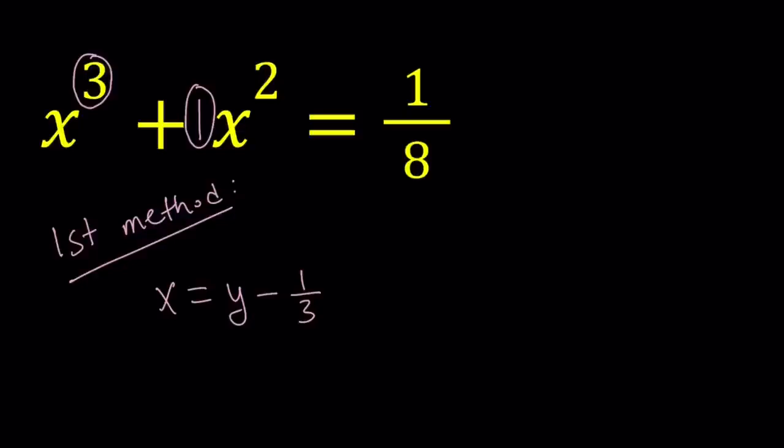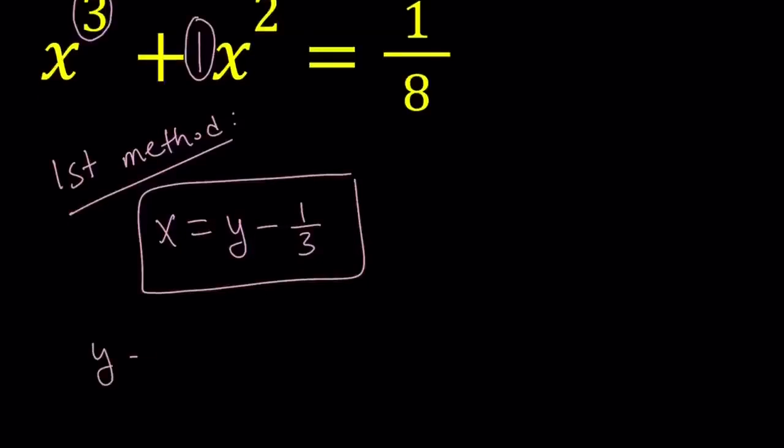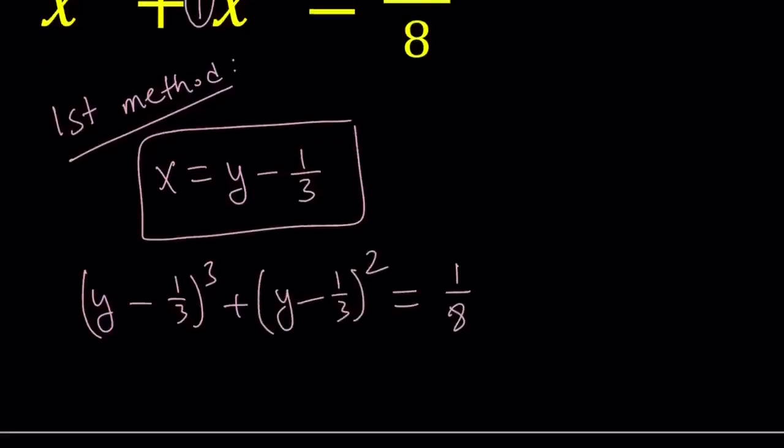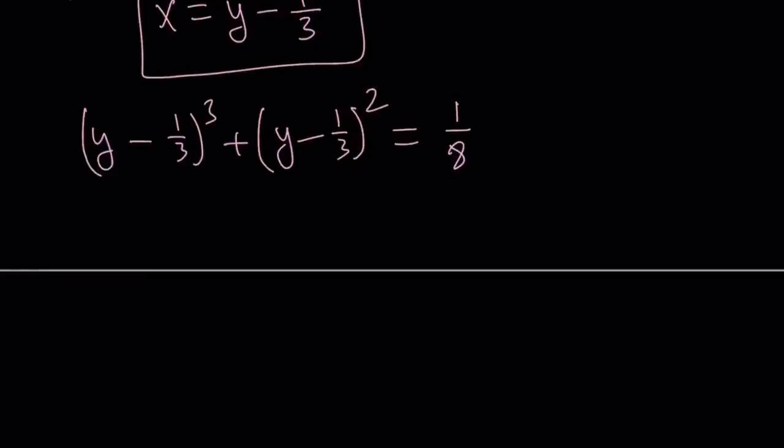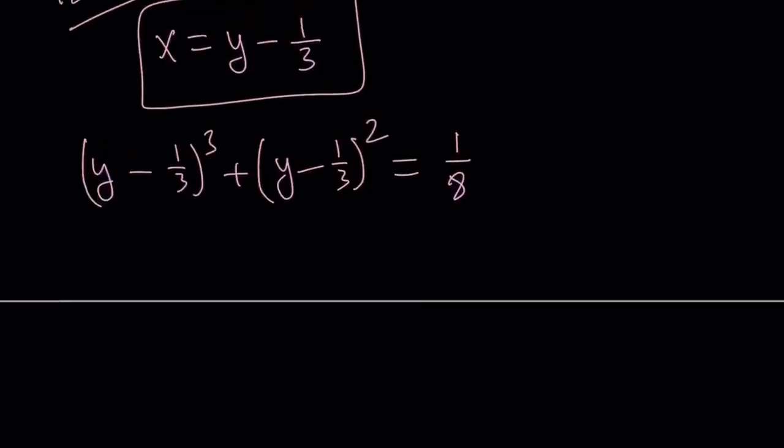There's a cubic formula. There's a quartic formula, which is quite complicated. And unfortunately, no quintic formula is available. So if you go ahead and replace x with y minus 1 third, we're going to get y minus 1 third cubed plus y minus 1 third squared equals 1 over 8. This is going to allow us to get rid of the quadratic term, in other words, y squared.